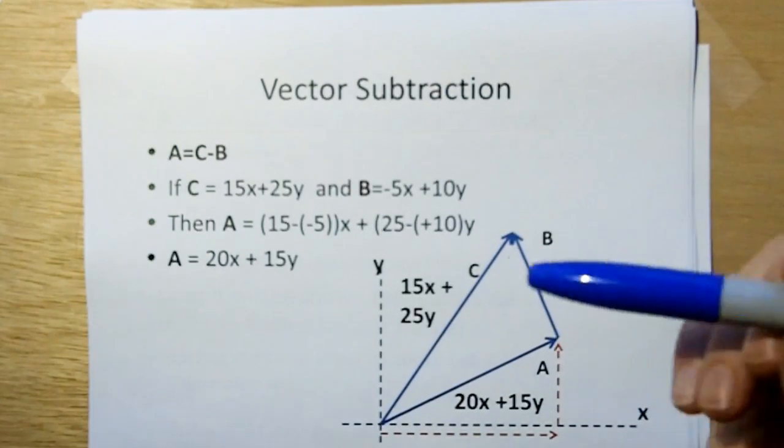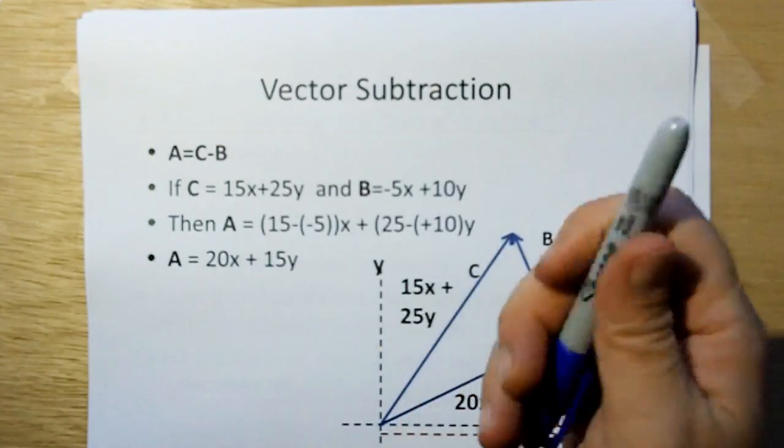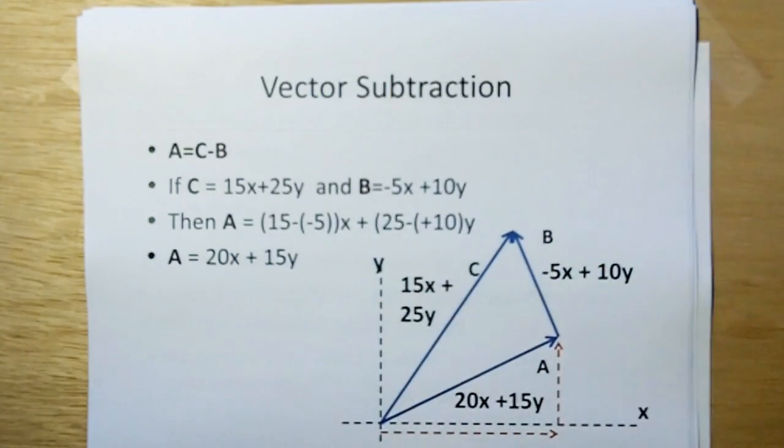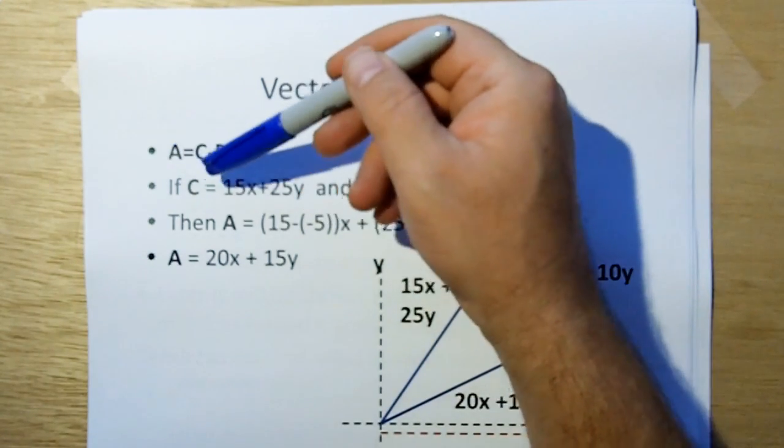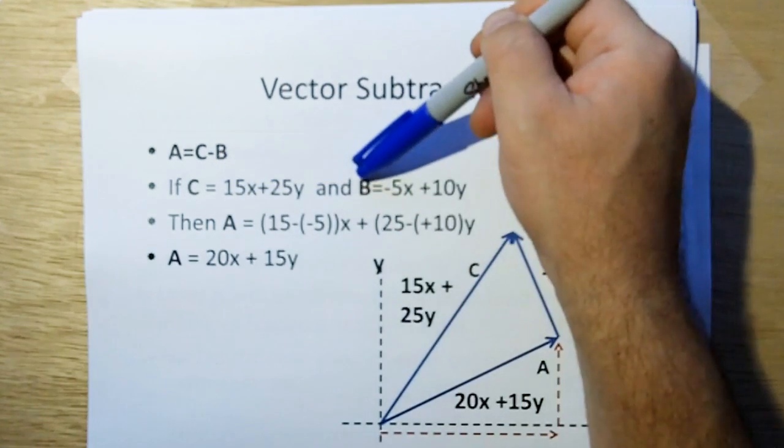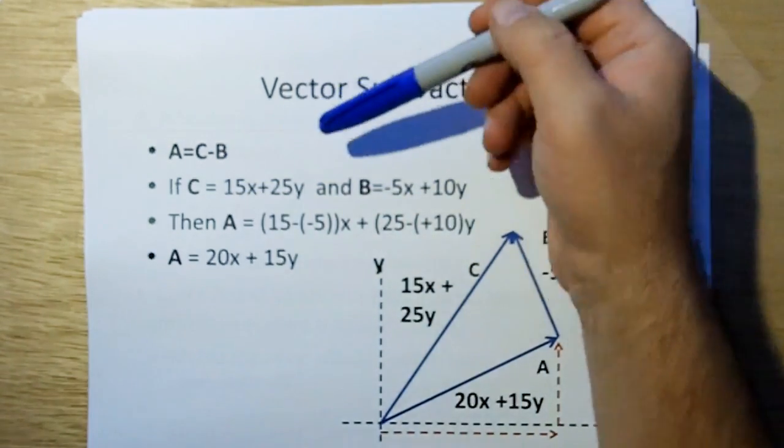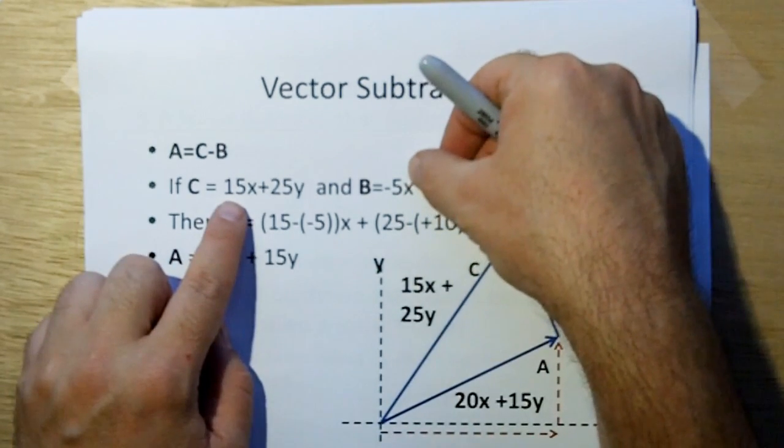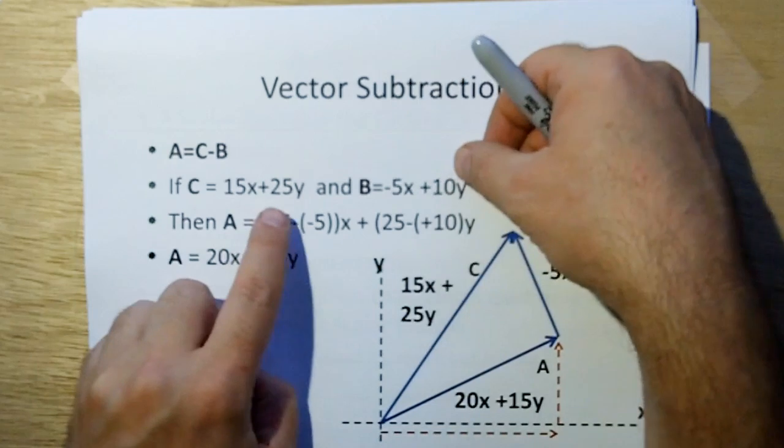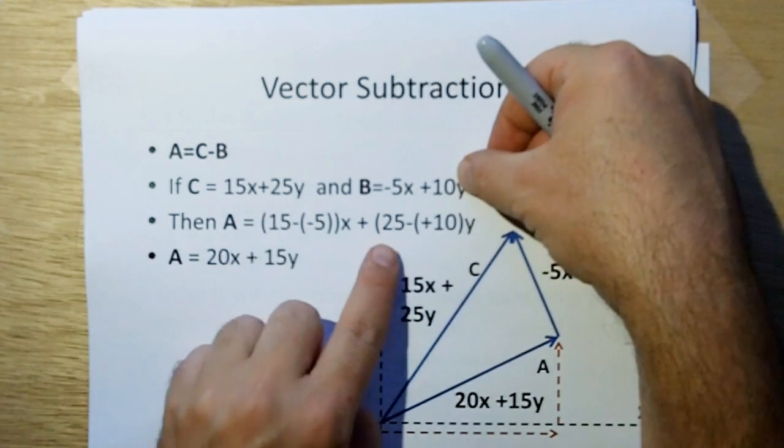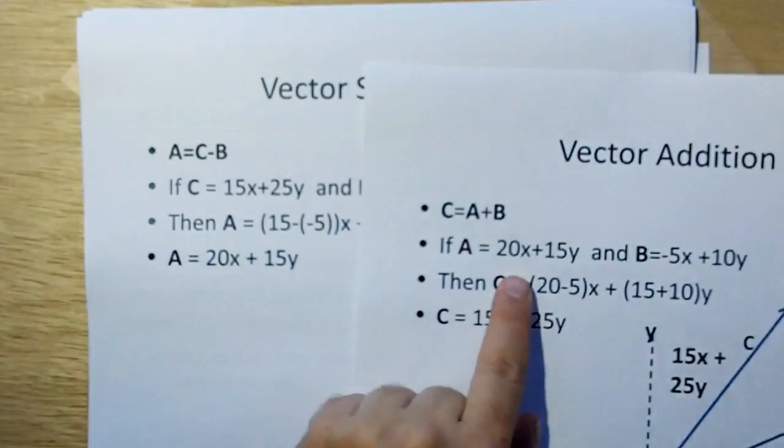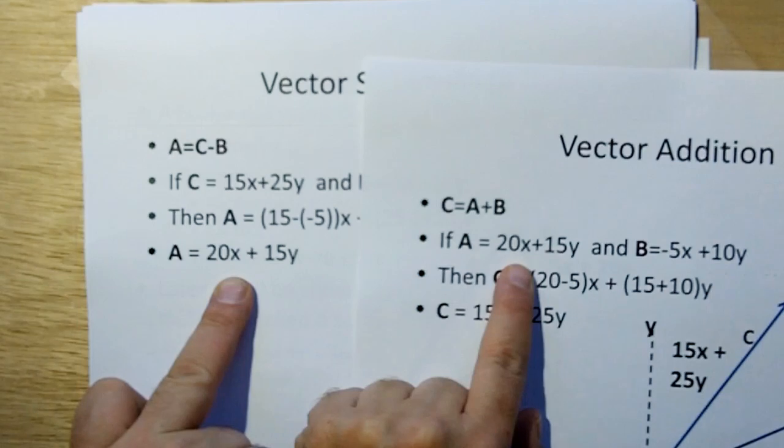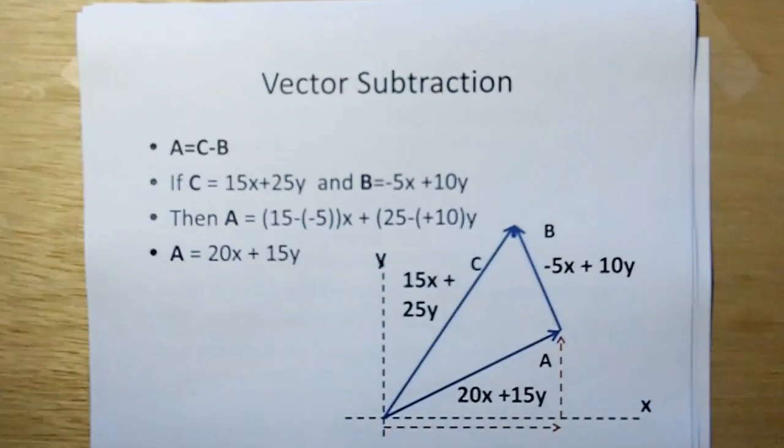Vector subtraction works the same way in reverse. Let's say we started with C and we want to find A. So C minus B is equal to A. So if C is 15x plus 25y and B is minus 5x plus 10y, well then you subtract from 15, you subtract the 5, which is the same as adding 5, that would give us the 20. And then the 25 minus the 10, 25 minus the positive 10, which gives us 15. And we can see that A is the same thing we defined earlier when we summed it to get to C. So that kind of shows you that subtraction, addition and subtraction are reciprocal functions in vectors.